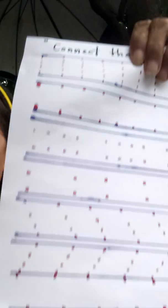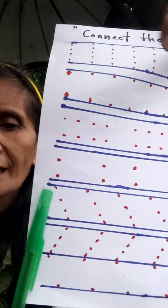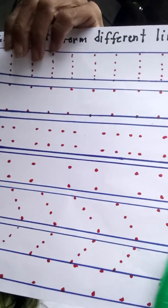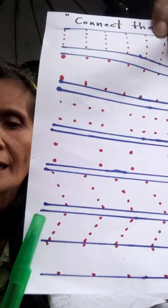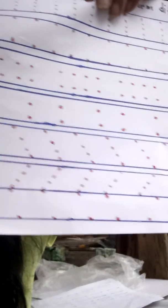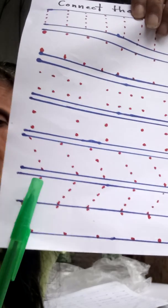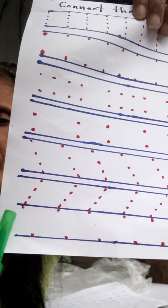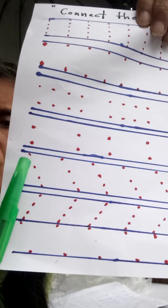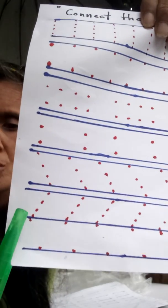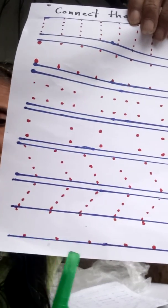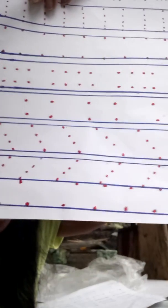Next are the slant lines or slanting lines, from left to right, up to the end. The next one is the slanting line from right to left, up to the end. Space is provided for them to do on their own, with two dotted lines from top to bottom. They start from the top, making slanting lines from left to right, and from right to left.